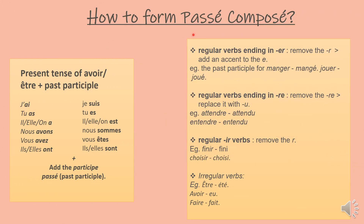How to form passé composé. Passé composé has two parts: first part is the present tense of avoir or être, plus the past participle. To recollect, the present tense of avoir is: j'ai, tu as, il ou elle ou on a, nous avons, vous avez, ils ou elles ont. For être: je suis, tu es, il est, nous sommes, vous êtes, elles sont. After this, we add the participe passé, which is the past participle. For different verb endings, we have different past participles.